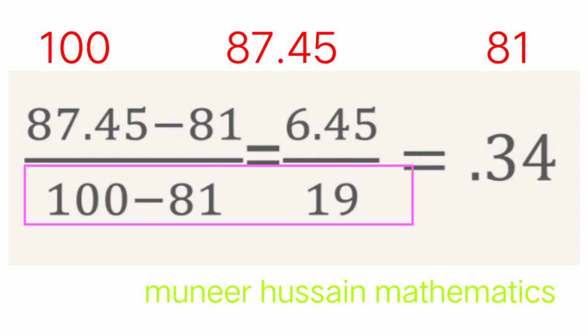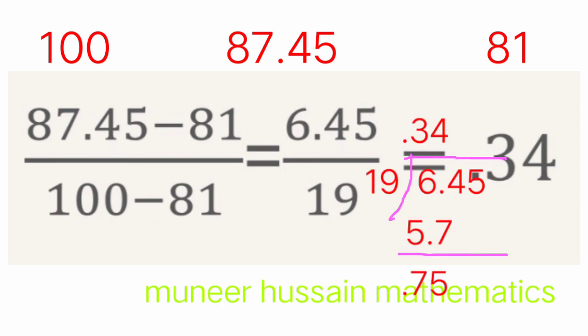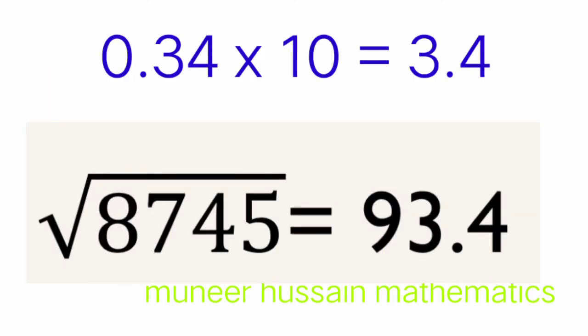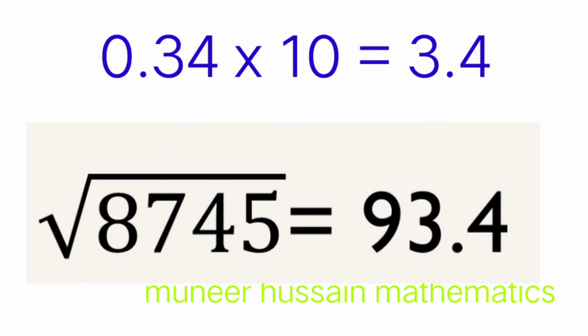Dividing 6.45 by 19: 19 × 3 = 57, 19 × 4 = 76, so 6.45 / 19 ≈ 0.34. Multiplying by 10 gives 3.4. Adding this to the base estimate: 90 + 3.4 = 93.4. So our estimated answer for the square root of 8745 is 93.4. I hope you have understood. See you in the next video, thank you.